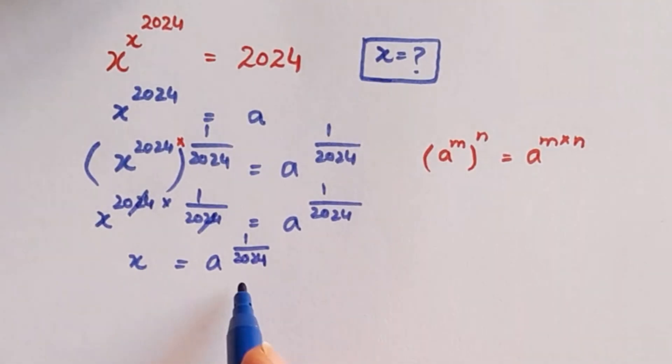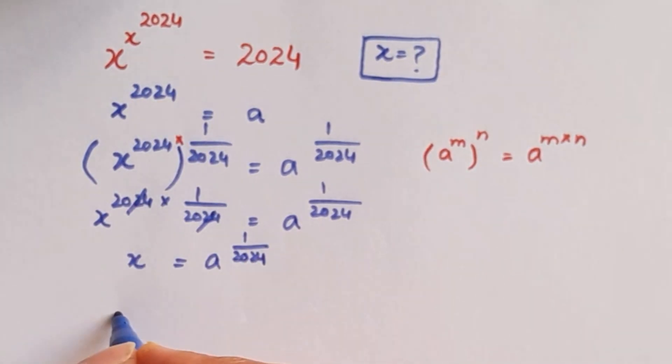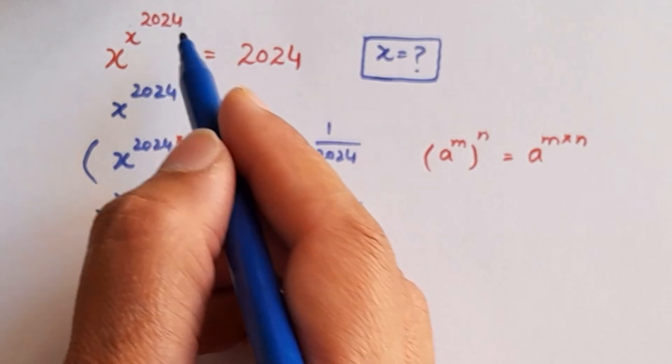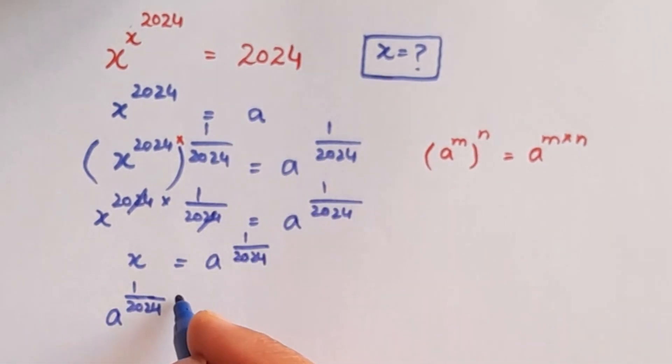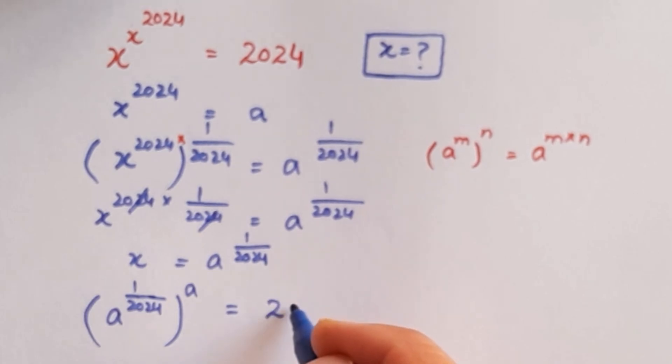Now we are going to put this value in the given equation. That equation will become a to the power 1 over 2024, and we know this part x to the power 2024 equals a. The whole part a is equal to 2024.